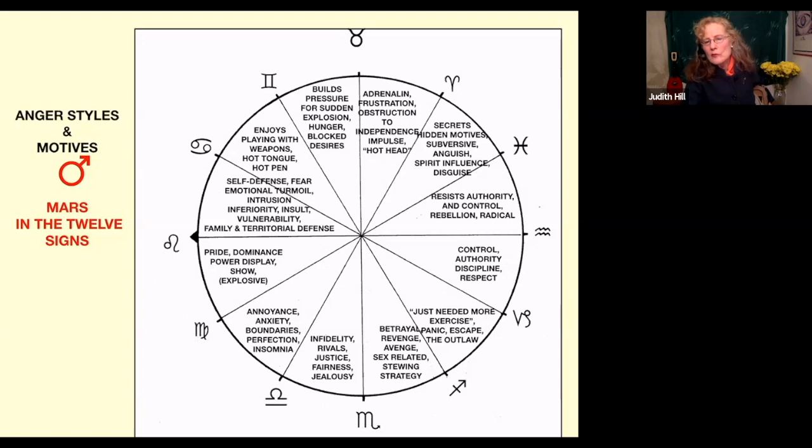Scorpio and Libra combinations, they'll get very angry over betrayals. Scorpio is very happy once it's equalized or someone apologizes. They're not unreasonable as Mars in Cancer can be.